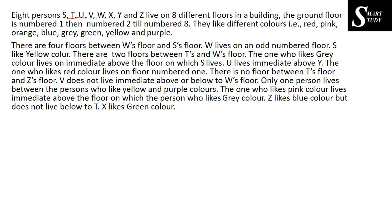Eight persons S, T, U, V, W, X, Y, and Z live on eight different floors in a building. The ground floor is numbered one, then number two till number eight. They like different colors — red, pink, orange, and others. So these eight persons like eight different colors and live on eight different floors. We need to arrange who is living on which floor and who likes which color.